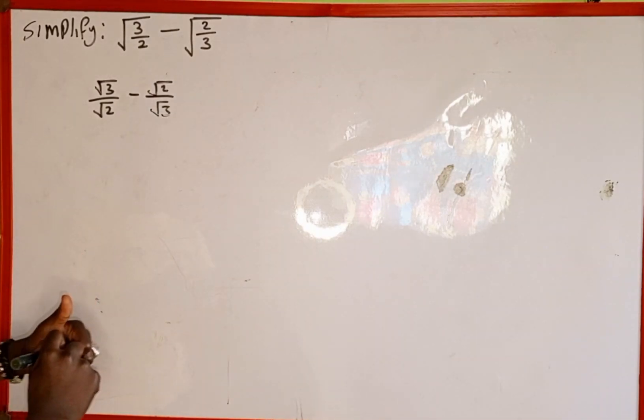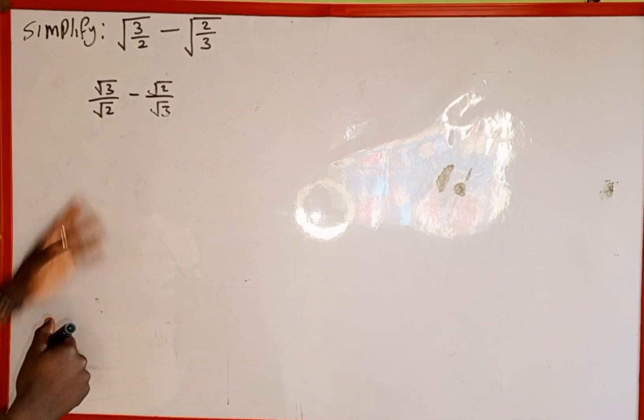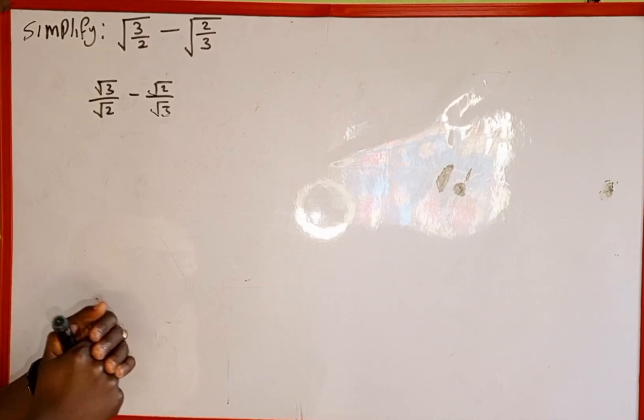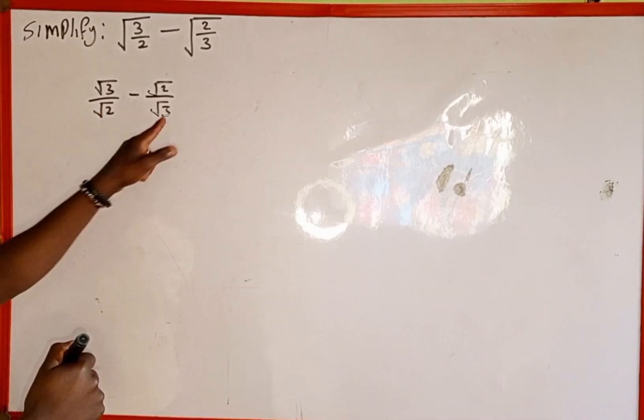So they can share the square root according to one of the properties of surd. Now the next thing we are going to do is to simplify. We are going to find the LCM of the denominator, √2 and √3.